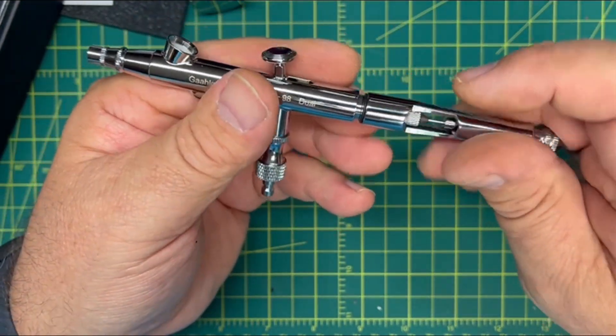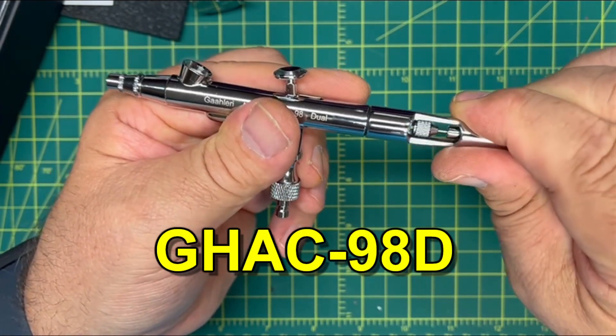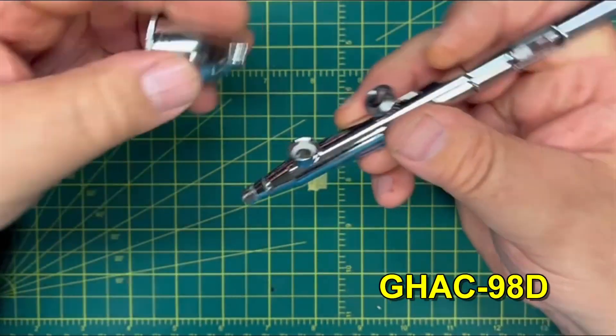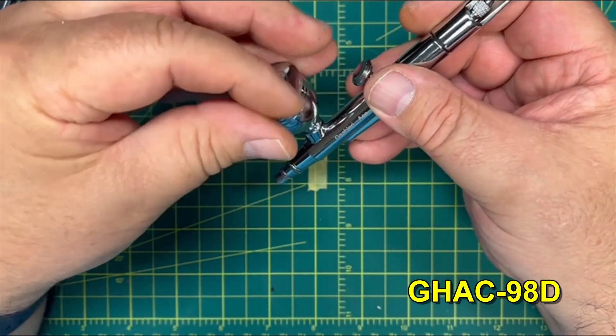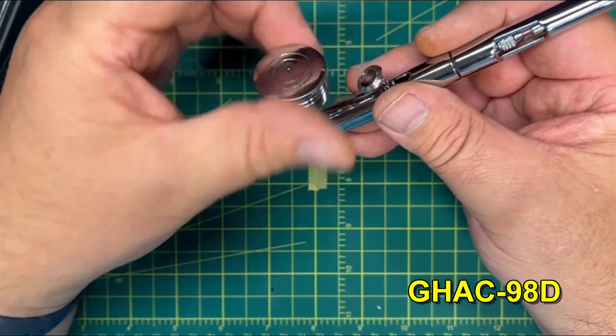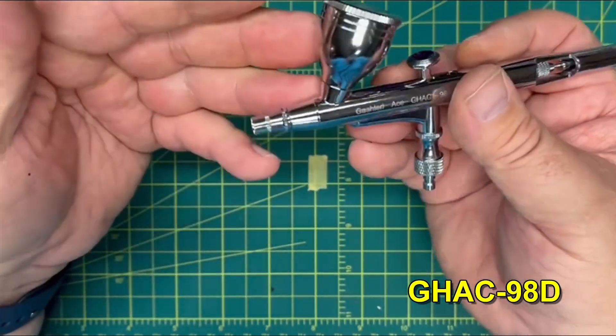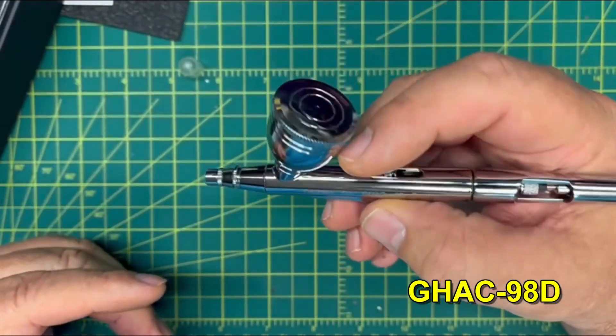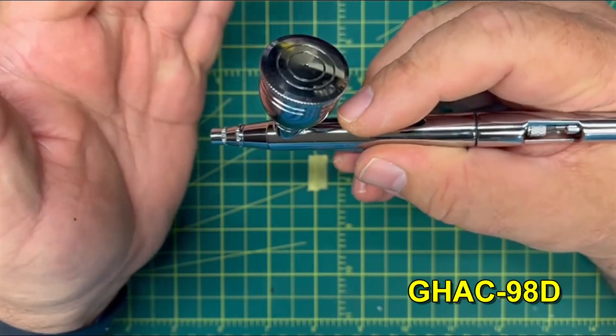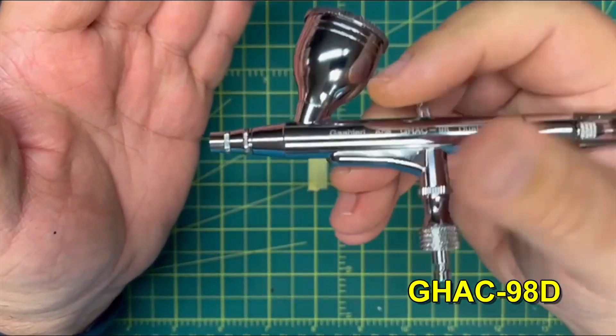And again, this is the GHAC-98 Delta. So there we go, cap—or cup, I'm sorry—just screws on. I always call it the cap for some reason. Those threads feel nice and tight too, or nice and clean, smooth. This has a comfortable weight to it. I keep saying it's got some weight—it does, but it feels nice. This is very comfortable in my hand.